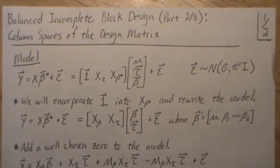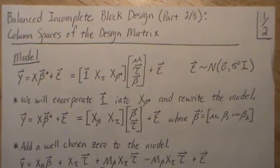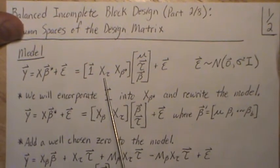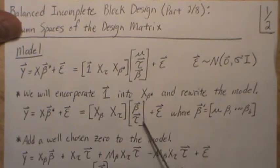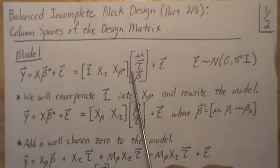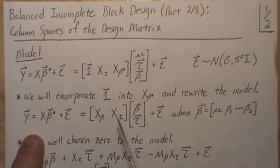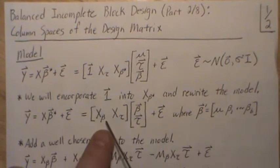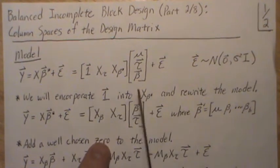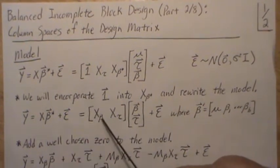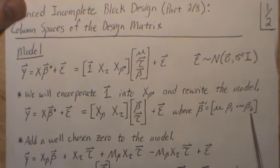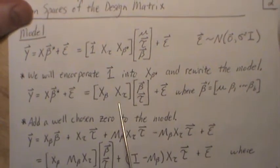Epsilon is multivariate normal with mean vector zero and variance-covariance matrix σ²I. For what we do next, we're going to move all the columns of X_tau to the end, which means we move this vector to the bottom. The column of ones gets put into the X_beta matrix. The columns are 100% the same and the parameters are 100% the same — they're just organized a little differently. When we do the multiplication, beta gets multiplied by X_beta, and the mu parameter is encompassed into that.